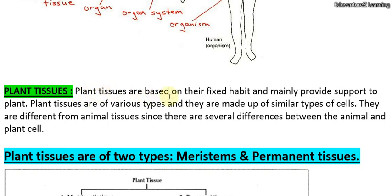Plant tissues are based on their fixed habit. Plant tissues have a fixed habit and mainly provide support to the plant.